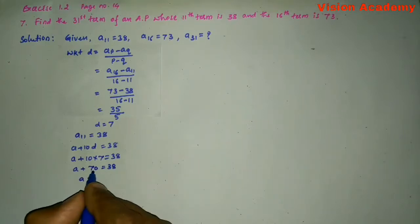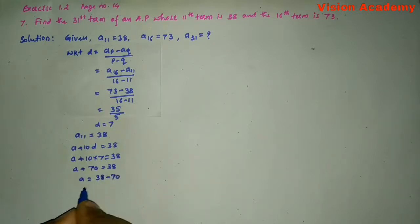A is equal to, let us transform the 70 from LHS to RHS, 38 minus 70. Here A is equal to 38 minus 70 gives us minus 32.